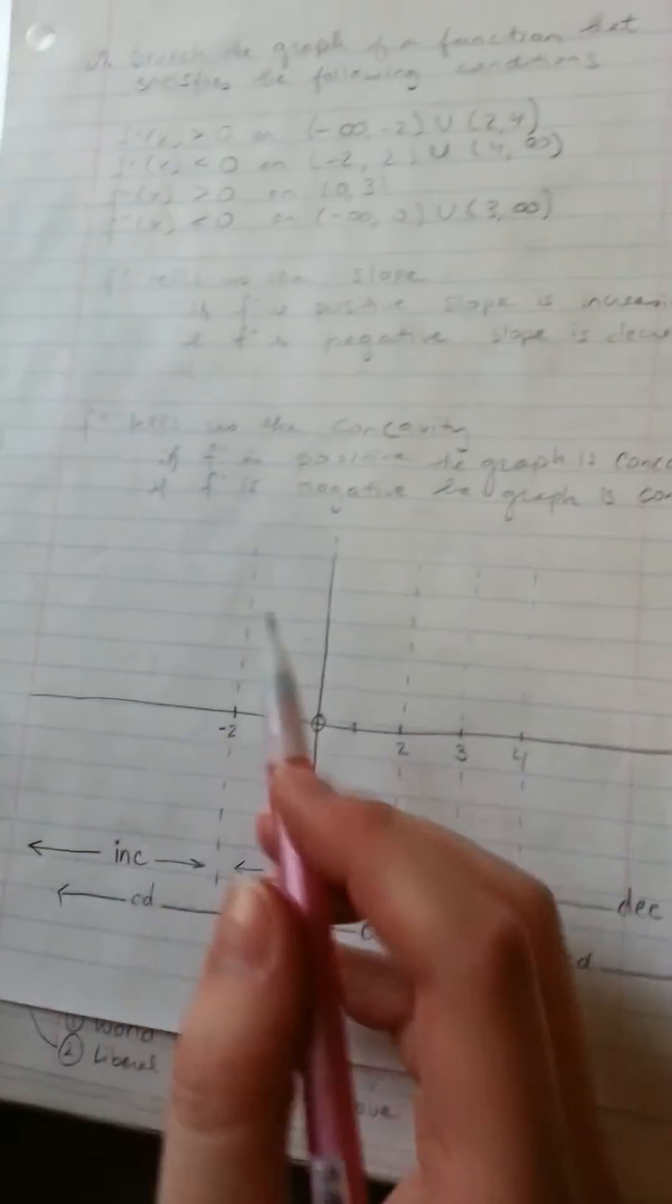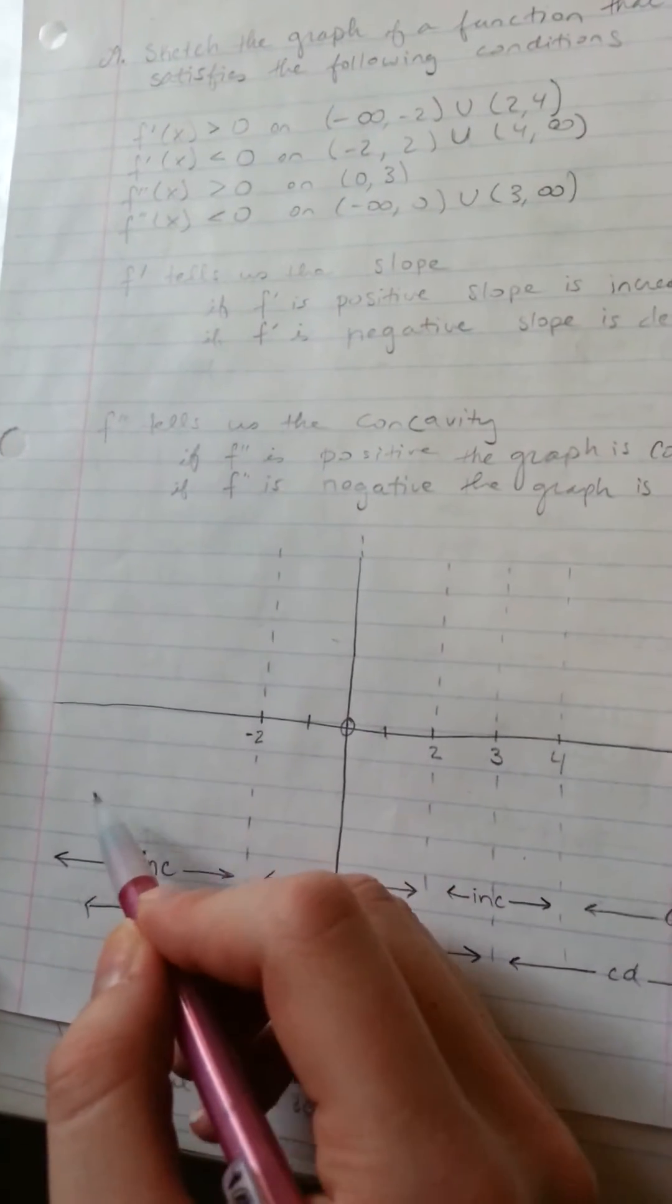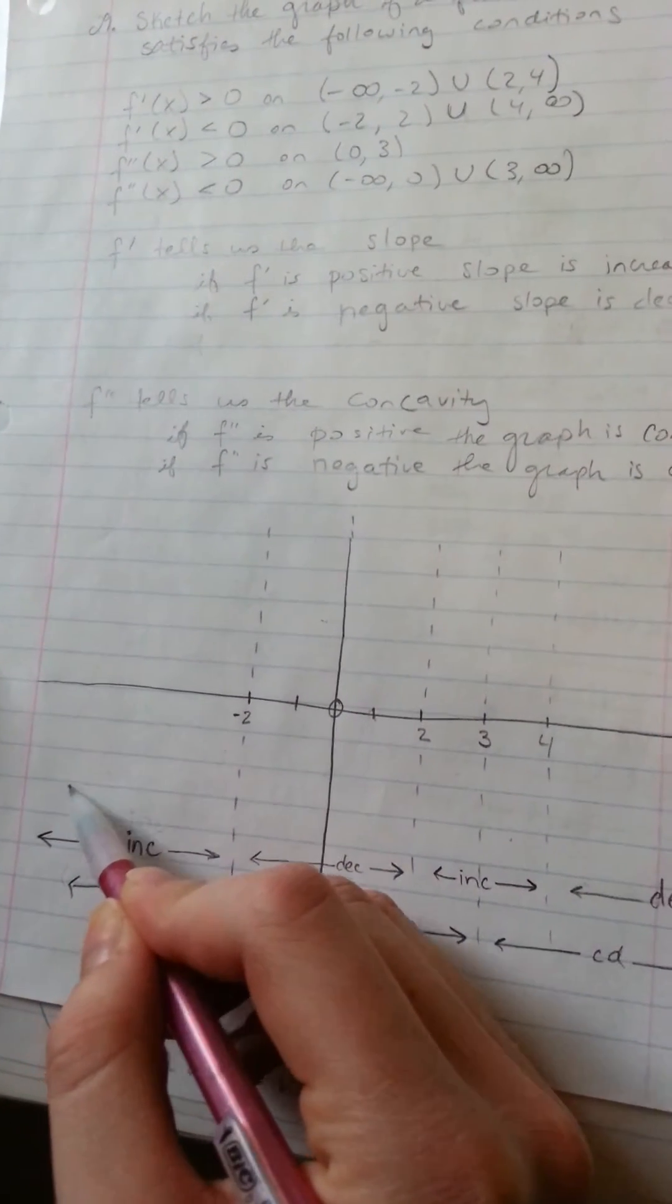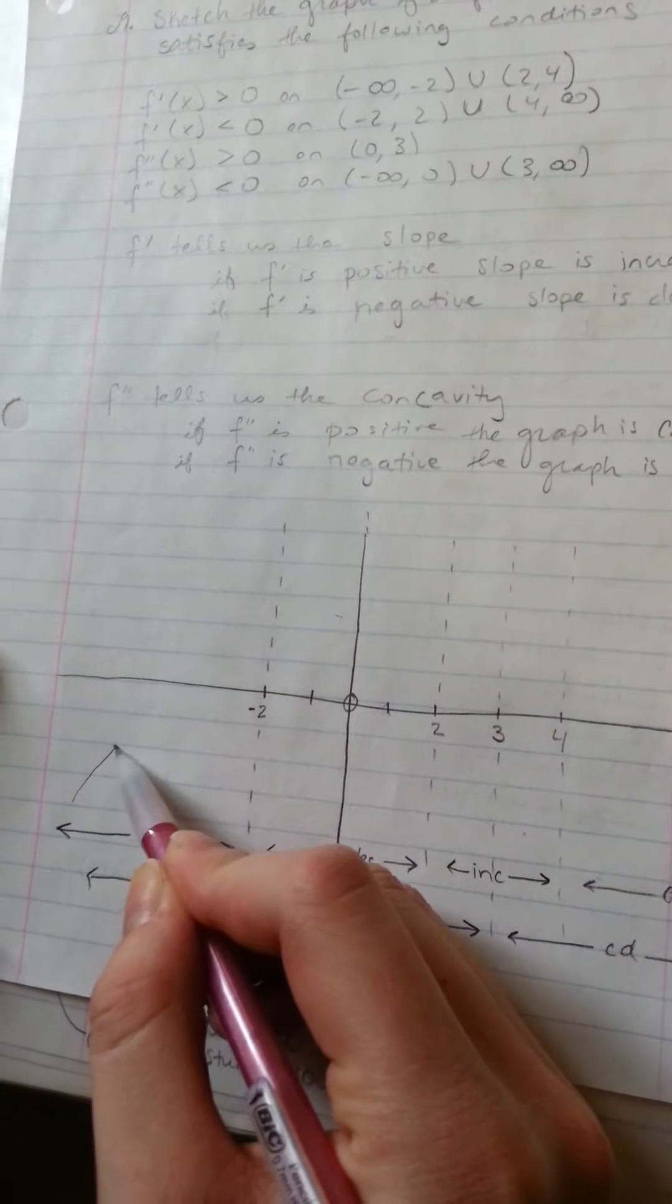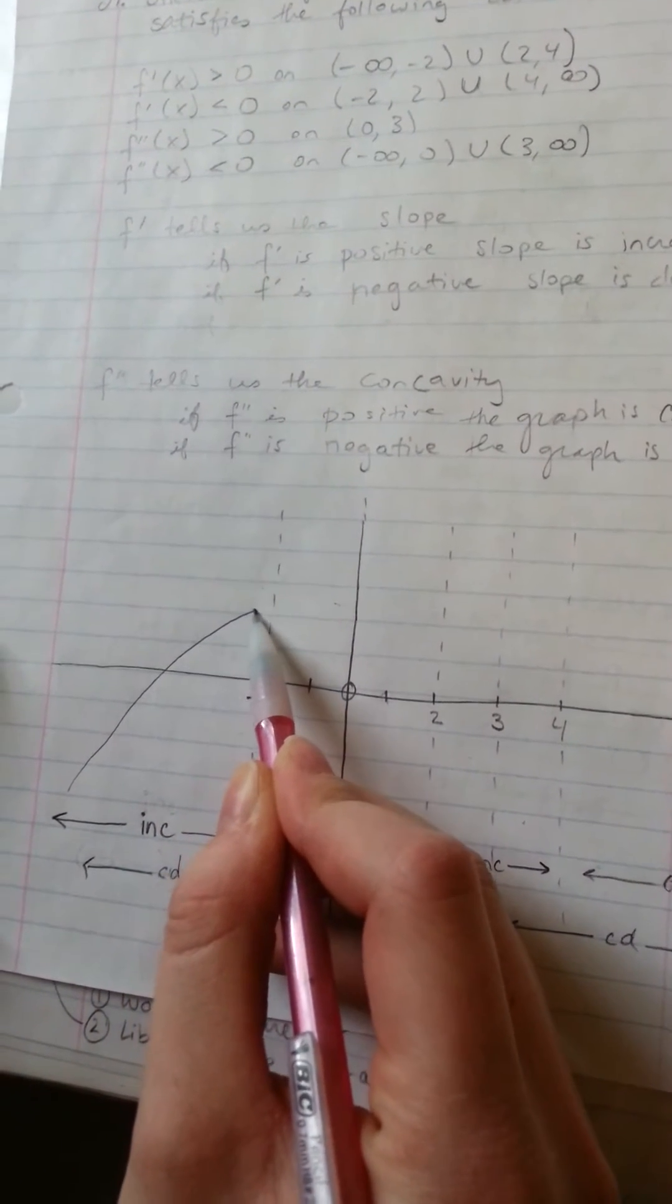So for the first one, we're going to have concave down increasing. So we're going to go up, making sure that we're going to be concave down.